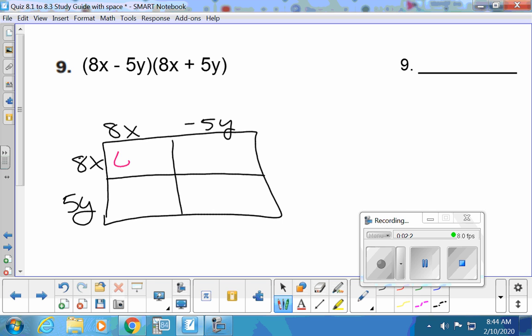So we'll have 64x squared in this box, negative 40xy in this box, positive 40xy in this box, and negative 25y squared in this box. What happens with our boxes that are alike, these two boxes? They add up to what, though? Positive 40 and a negative 40. Zero.